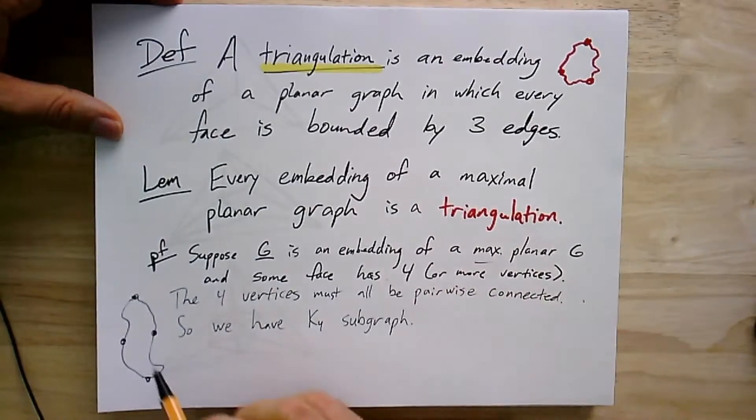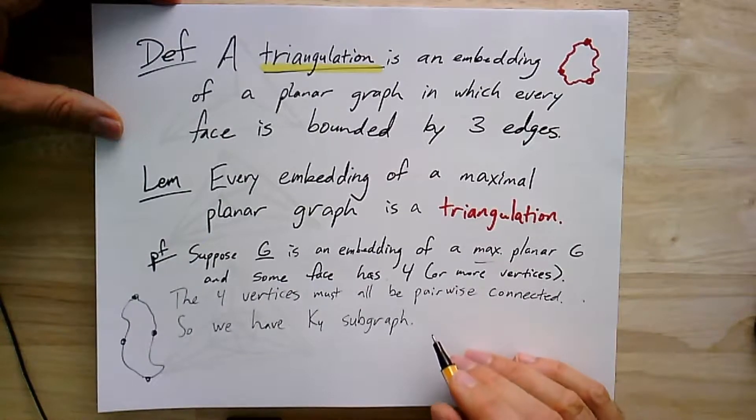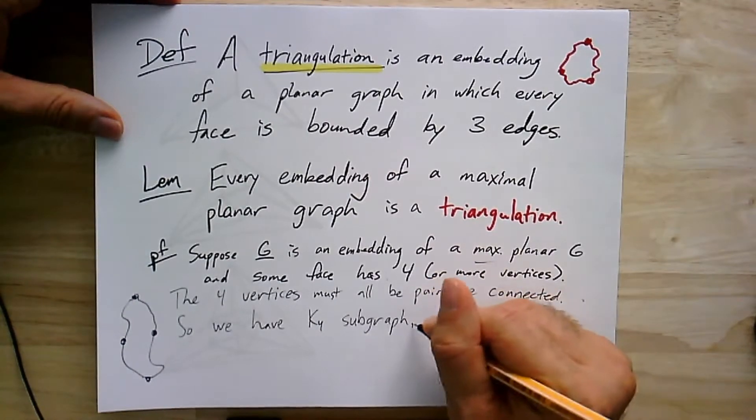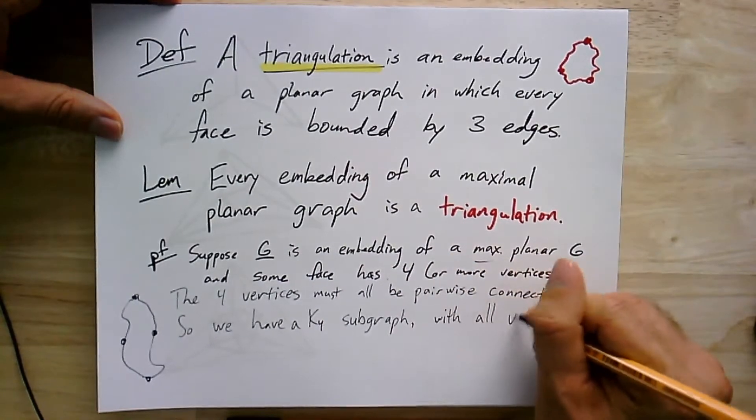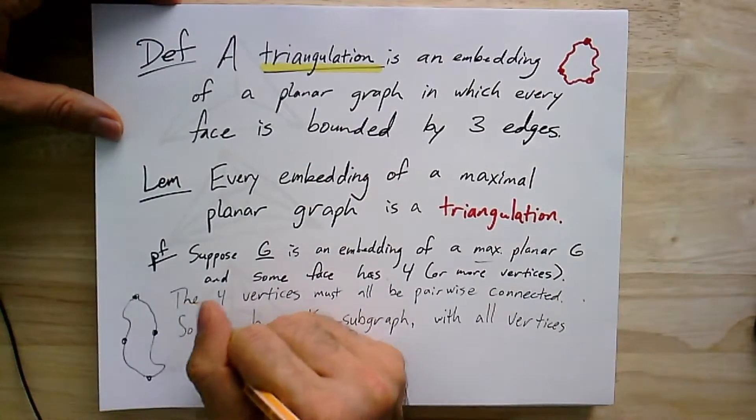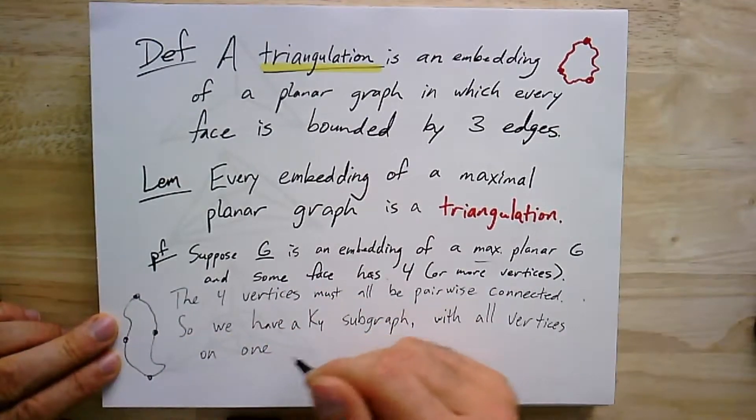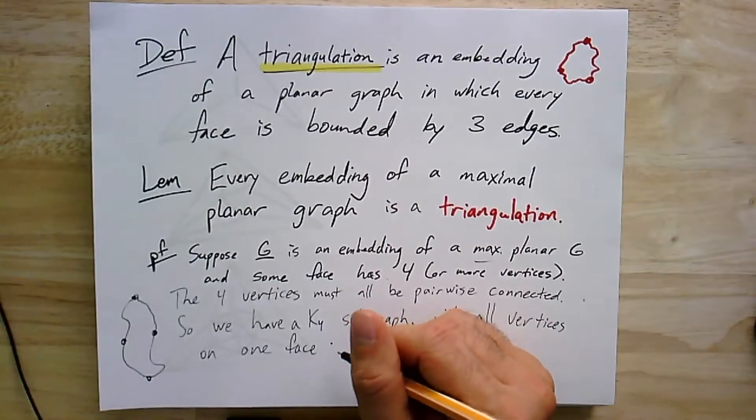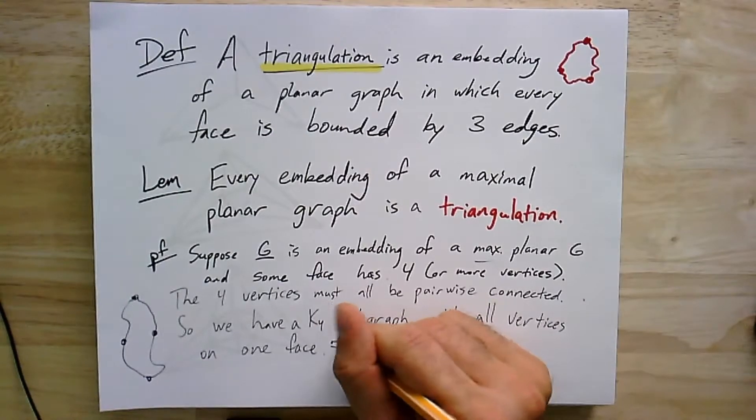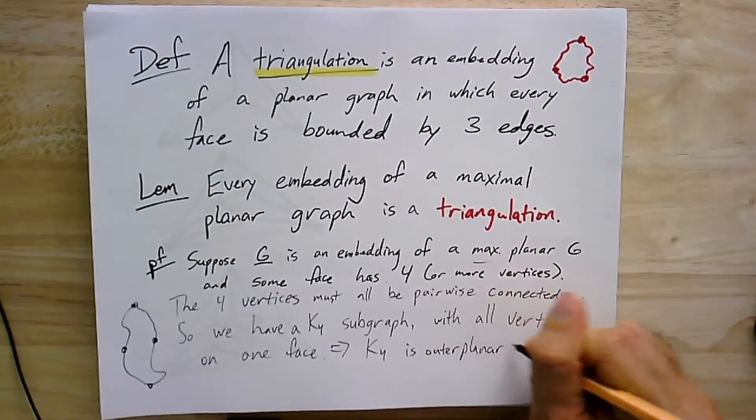But this is a bit strange, because if I have a K4 subgraph, then the four vertices can't all be on the same face, because then that would imply that K4 is outer planar. So I should maybe add this K4 subgraph with all vertices on one face. So if I took the embedding and I just take the subset of the embedding where this K4 got embedded, then I would get an embedding of K4 with all the vertices on one face. And we saw that that's not possible. So that would imply K4 is outer planar, which is a contradiction.